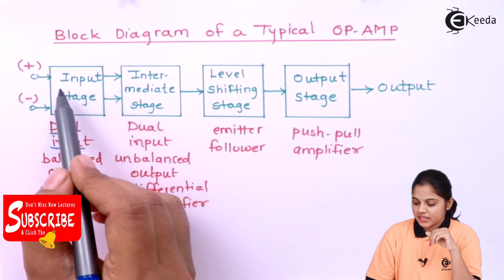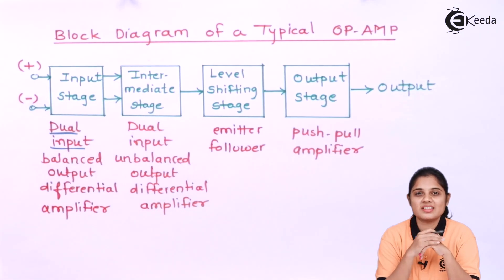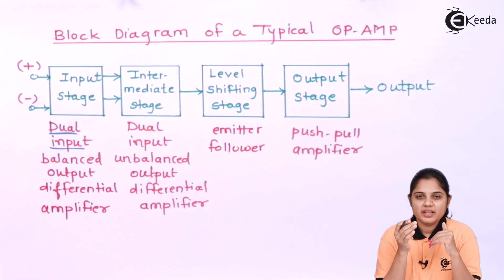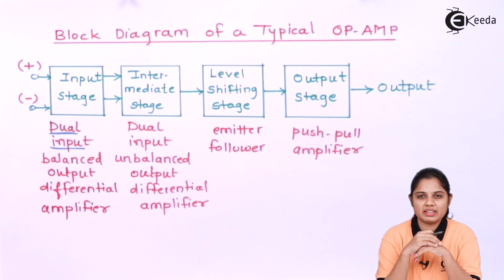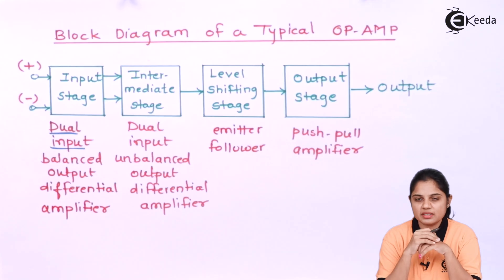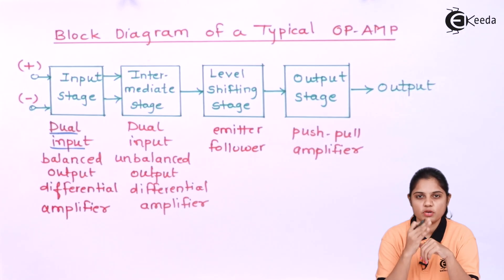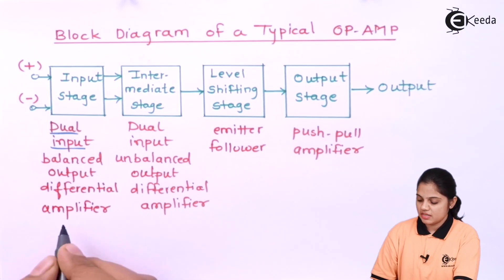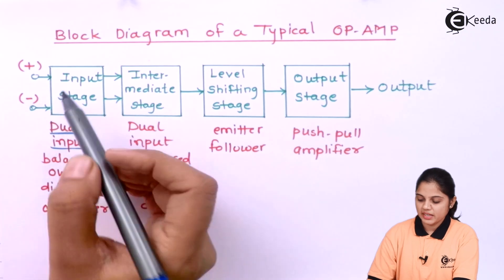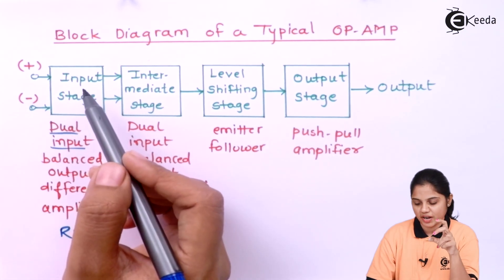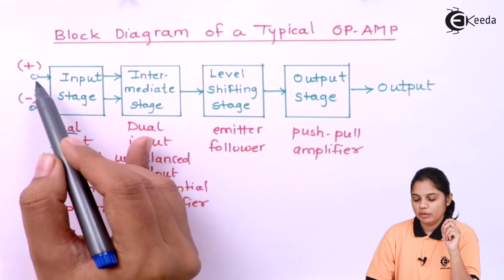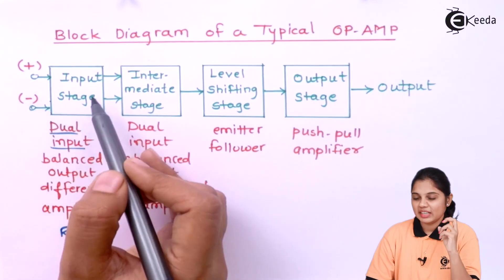This input stage is essentially a drive stage and will decide what the input resistance of the op-amp is. Input resistance is one of the ideal characteristics of the op-amp — ideally it should be infinite, and practically it should be as high as possible. So the input resistance Ri is defined by this input stage, which is a differential amplifier where the difference between the two input terminals is amplified and given as an output.